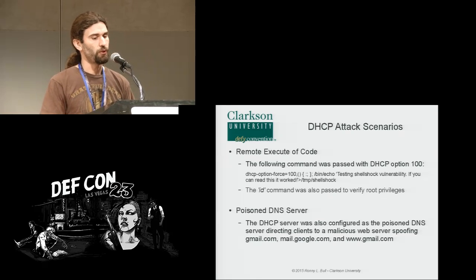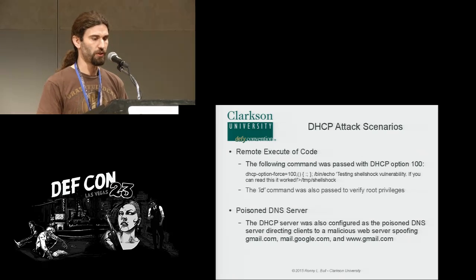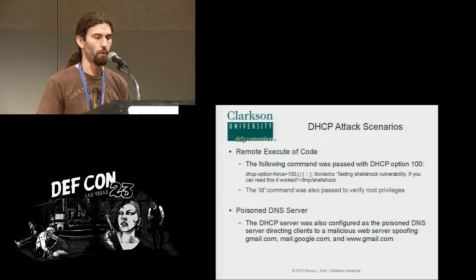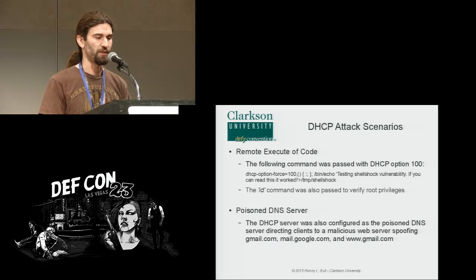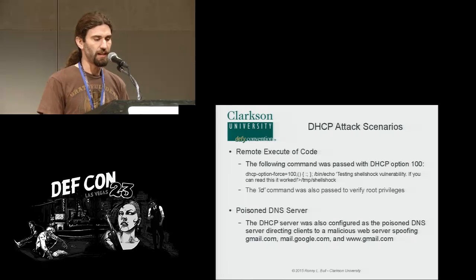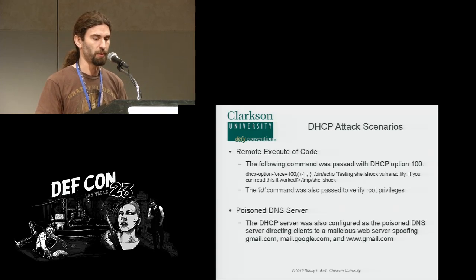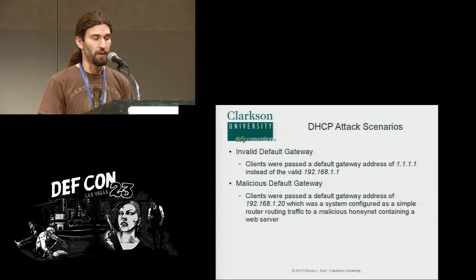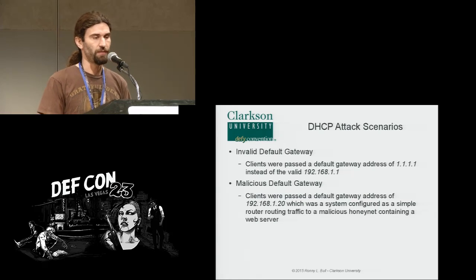For the remote code execution scenario, we passed option 100 with the Shellshock payload. The proof-of-concept command echoed 'testing shellshock vulnerability, if you can read this it worked' to a file in /tmp called shellshock. We also tested access level using the ID command — when the client received its IP address information from the DHCP server, it showed we were running as root. For the poison DNS attack, we passed poison DNS server information and spoofed mail.google.com and www.gmail.com to steal user credentials. The invalid gateway attack passed 1.1.1.1 to deny service, and the malicious gateway attack gave address 1.20 pointing to our honeynet system.